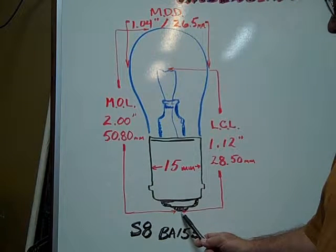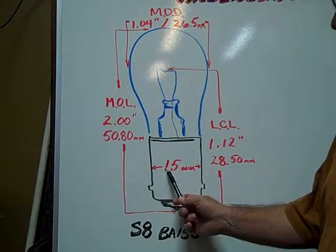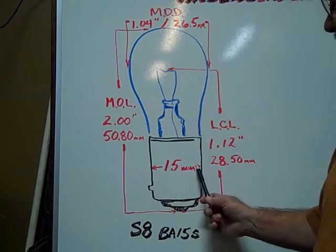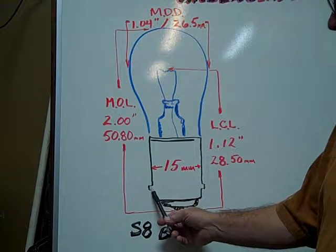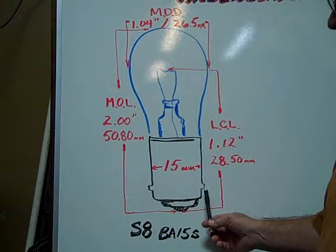S signifies single contact, the 15 signifies 15mm diameter of the base. The pins are directly across from each other on the base.